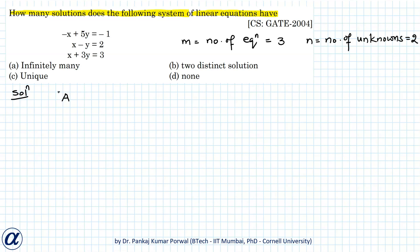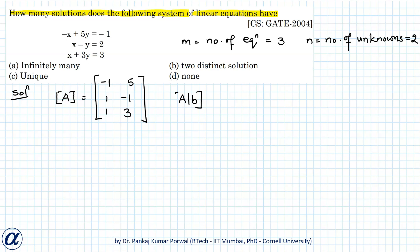In the rank method we need the ranks of the coefficient matrix A and the augmented matrix. Matrix A will be [−1, 5; 1, −1; 1, 3] and the augmented matrix will be [−1, 5, −1; 1, −1, 2; 1, 3, 3].